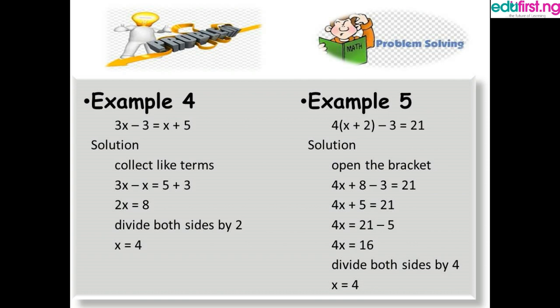We open the bracket first by multiplying 4 by what's inside: 4 times x equals 4x, and 4 times 2 equals 8. So we have 4x plus 8 minus 3 equals 21, which simplifies to 4x plus 5 equals 21. Collecting like terms: 4x equals 21 minus 5, so 4x equals 16.